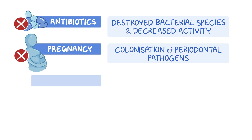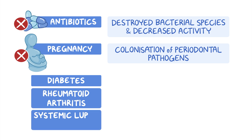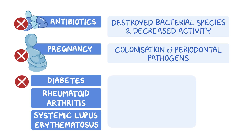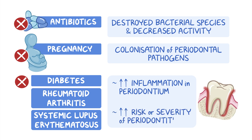Some systemic diseases, such as diabetes, rheumatoid arthritis, and systemic lupus erythematosus, can enhance inflammation in the periodontium, which can lead to a shift in bacterial composition and increase the risk or severity of periodontitis.